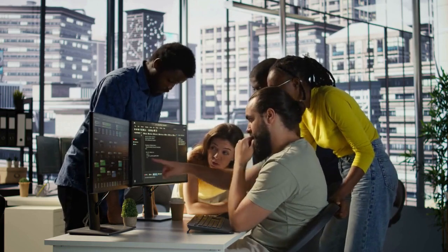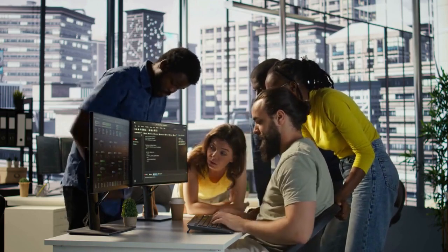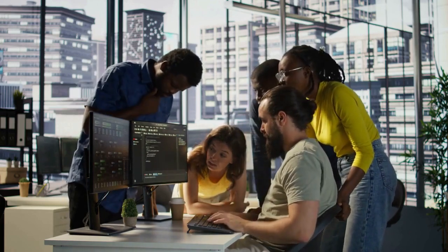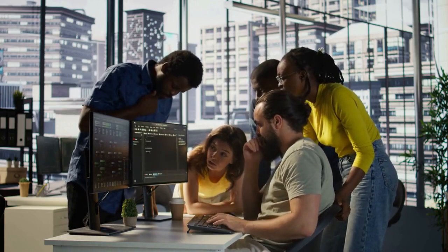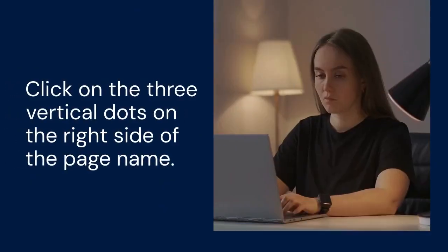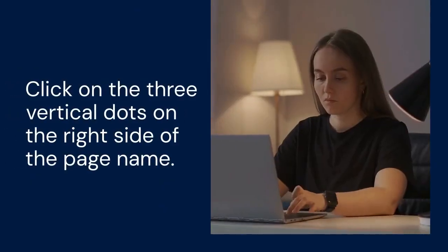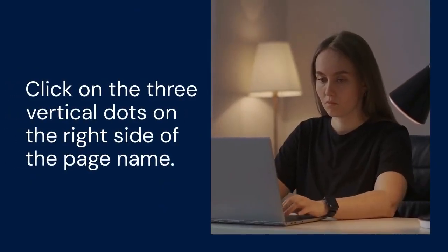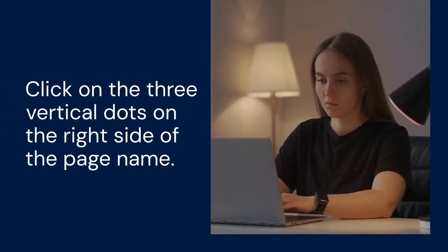First, open your Google site and go to the page you want to translate. Click on the three vertical dots — you'll find these on the right side of the page name. Choose Duplicate Page. This creates an exact copy of your original page.